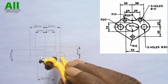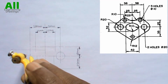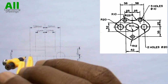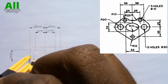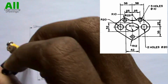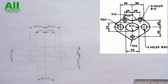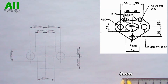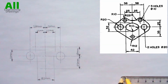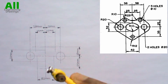Also place your compass on this point. Using the same radius, draw another circle. After that, adjust your compass to a radius of 5mm, then draw a circle on this point.